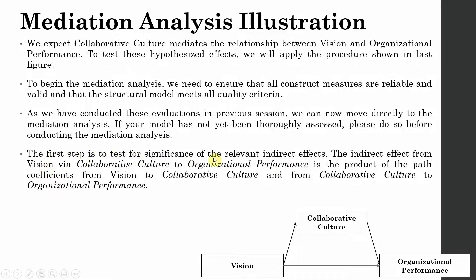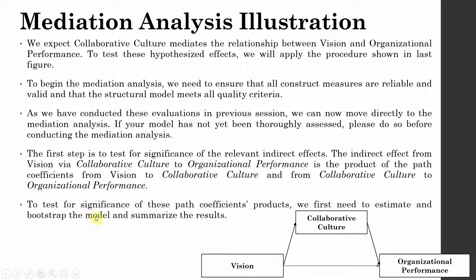The first step is to test for significance of the relevant indirect effects — whether the influence of vision on organizational performance through collaborative culture is significant or not. That is, whether your P1 and P2 are significant or not. To test for significance of these path coefficients, we first need to estimate and bootstrap the model and summarize the results, using the same procedure as before.